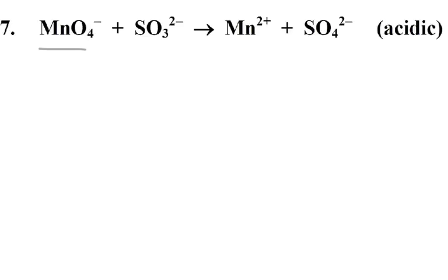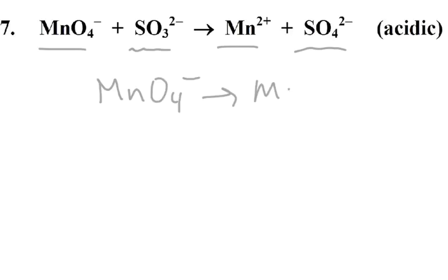The thing we need to figure out: what are the two kinds of changes that take place? We can see that manganese looks like it's making a change, and sulfur looks like it's making a change. So let's write out our two half-reactions. We'll do our sulfate, which is being formed from sulfite.